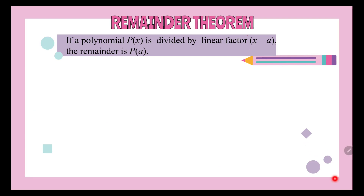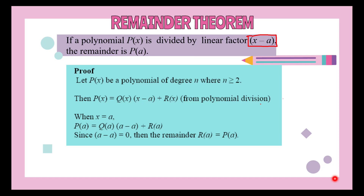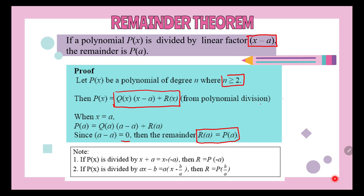So what is the remainder theorem? If a polynomial p(x) is divided by a linear factor x minus a, the remainder is p(a). Let p(x) be a polynomial of degree n where n ≥ 2. Then we can write p(x) as q(x) multiplied by (x minus a) plus r(x). When we substitute a into the polynomial, the remainder equals p(a). If p(x) is divided by x plus a, the remainder is p(−a). If divided by ax minus b, the remainder is p(b/a).